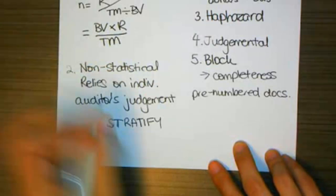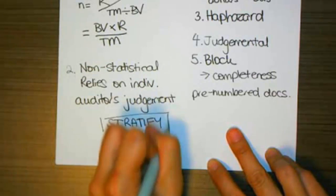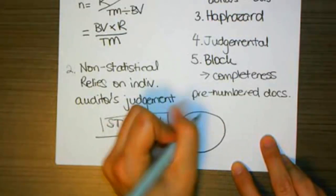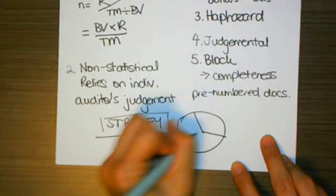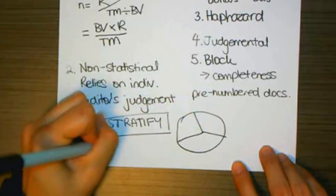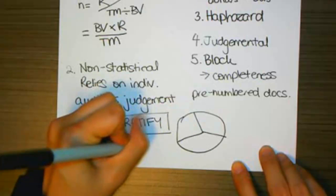So stratification means taking our population and breaking it into different groups. So I stratify a population, and for example, for accounts receivable, I might break that up into accounts that are worth a million dollars or more.